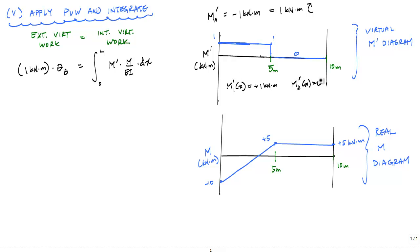So that's pretty easy. For the second moment function, the reason I'm using two segments here is because of this discontinuity right here. For the first real moment function, M₁(x), this is going to start at negative 10 kilonewton meters and it's going to increase at a rate of three kilonewton meter per meter, which is the slope of this line, times x, or the value of the shear diagram.